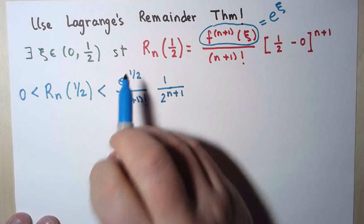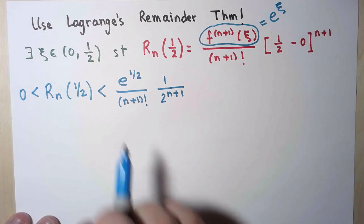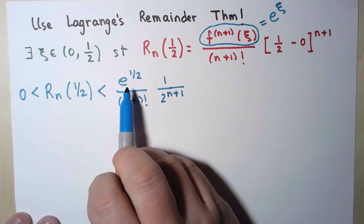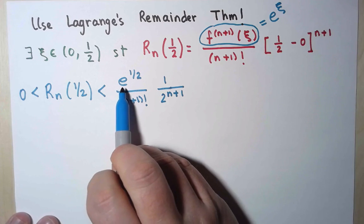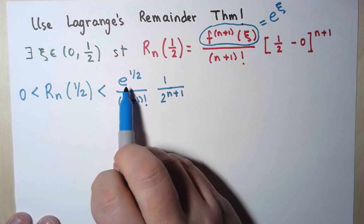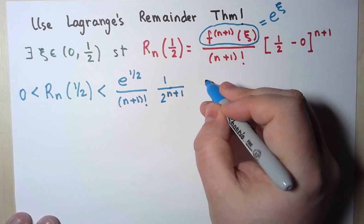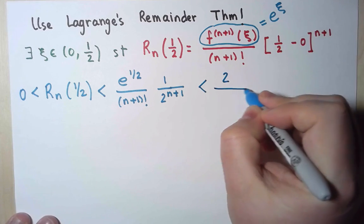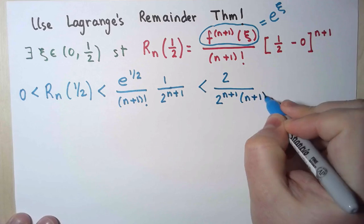And of course, I don't know what e to the 1/2 is, that is what I'm trying to calculate. But I just need to bound it. Well, e is 2.7-something, so e is smaller than 3, and the root of e is smaller than 2. So this is at most 2.